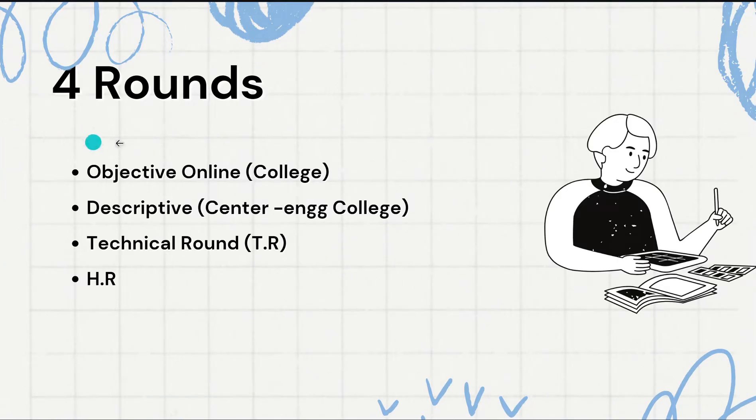It has mainly 4 rounds: Objective Online, which is held in colleges only, and the second round is Descriptive. In this round you are provided a center which is also an engineering college, but not your college. You should go to another college and attempt this descriptive exam. Coming to the third round is the TR Technical Round, and the fourth round is HR.